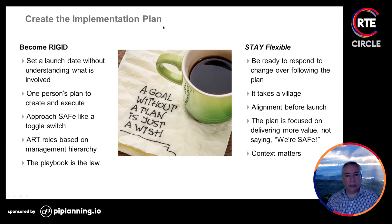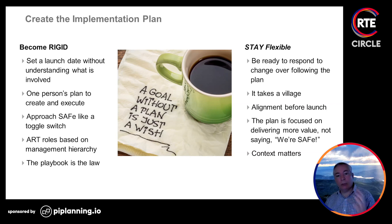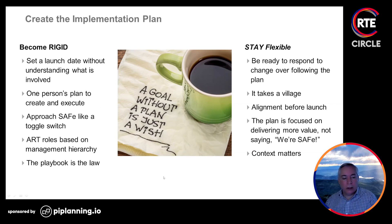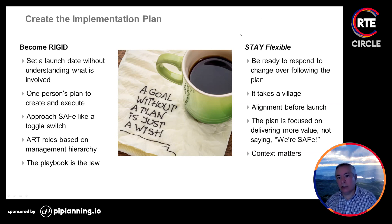ART roles are often based on management hierarchy — the project manager becomes the RTE, the program manager becomes the product manager. Those people might not be the right people for those roles. Don't think about hierarchy; think about who's best to fill those roles. Some companies develop a playbook — a set of rules and processes to implement SAFe — but what you should have in mind is the interpretation that's best for your context.